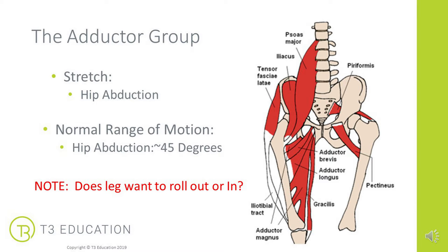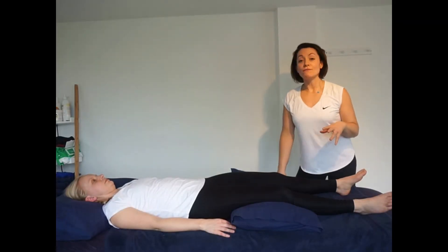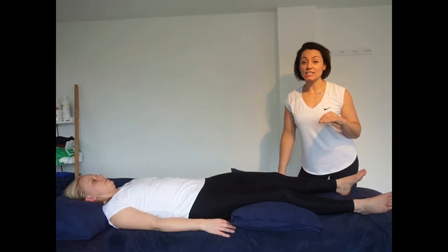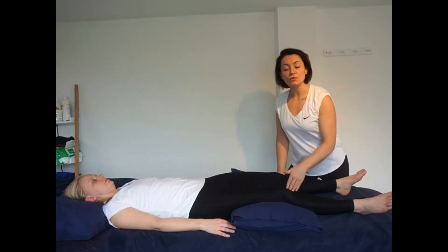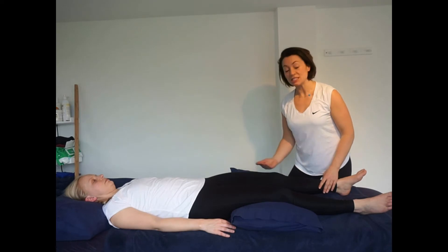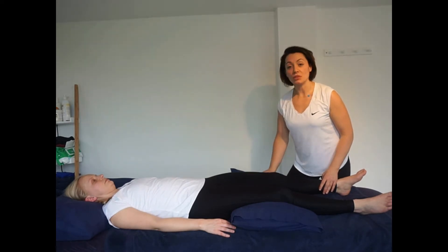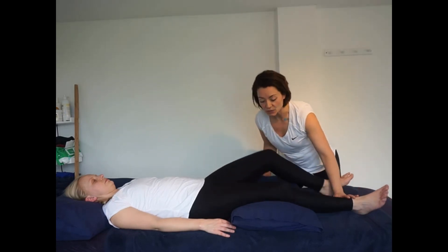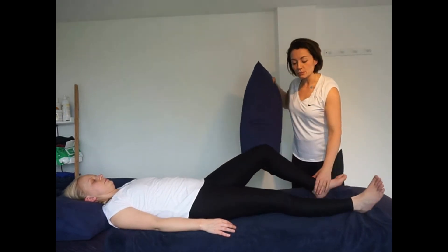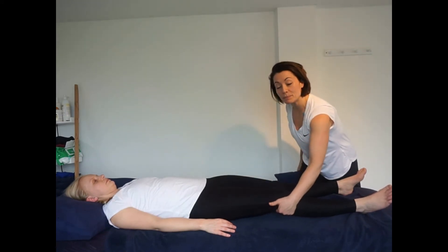We're going to apply the MET PIR technique for the adductors. I need to remove the pillow because it's important there's nothing in the way of movement — since we're moving sideways into abduction, the pillow must go. I'll ask my client to lift their knees so I can remove it. If someone's knee locks into hyperextension, I would keep a pillow under the passive leg.